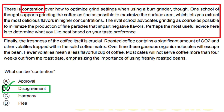Option D: Plea. This option is incorrect because contention does not mean plea or request. It refers to disagreement or conflicting opinions, not making a plea or request. In summary, option B is correct because it aligns with the meaning of contention as disagreement or differing opinions. The other options are incorrect because they do not accurately reflect the meaning of contention as described in the paragraph.